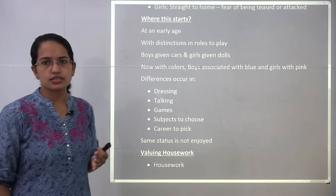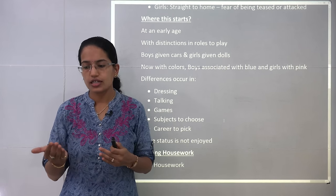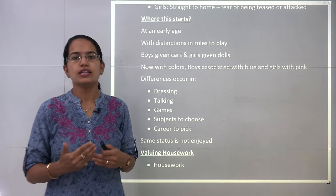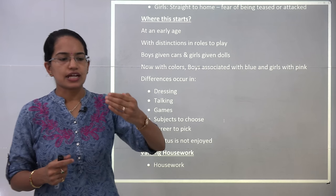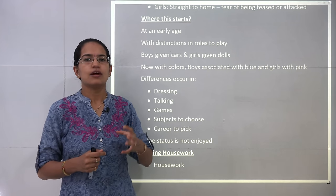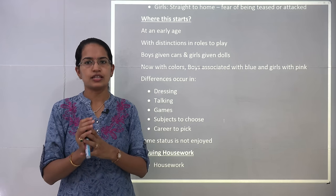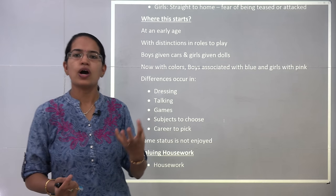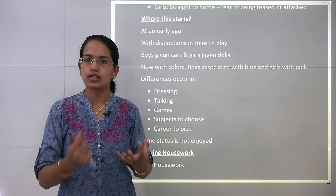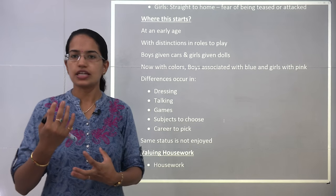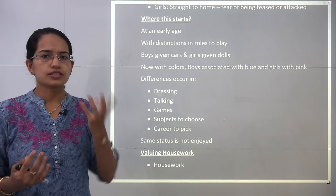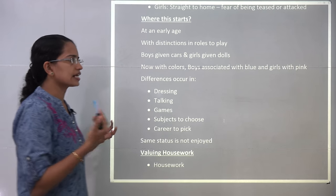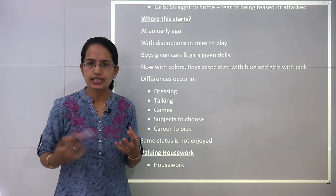This discrimination starts at a very early age because it exists in the mindset of most people. Boys are given things with blue color while girls are given things with pink color. Boys are given gifts like toys or cars, however girls are given dolls. These kinds of discrimination pop up at a very early age and create differentiations in various activities — be it dressing, talking, the games or toys they play.